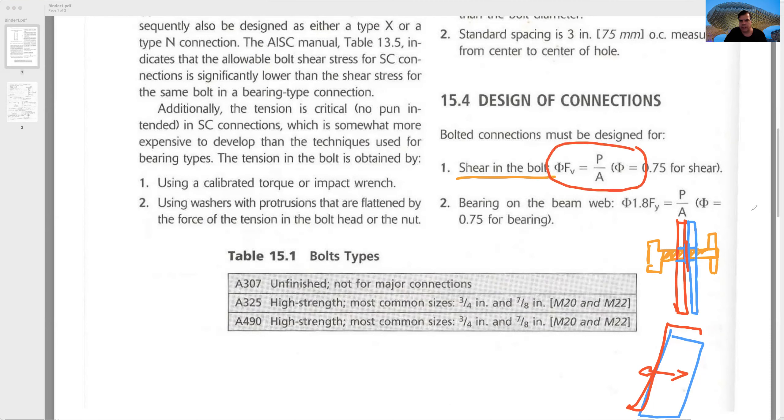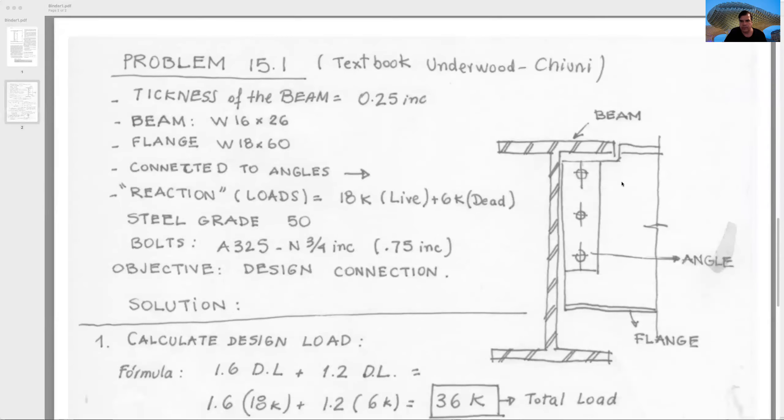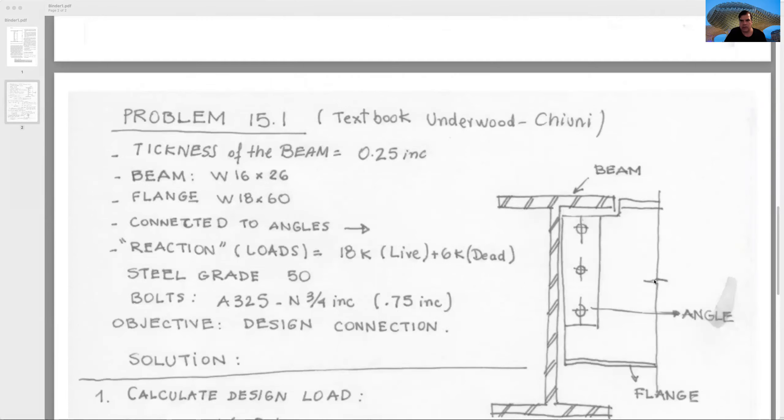Shear will be fvFv equal to P divided by A. P is the force, A is the area. The bearing on the beam web will be 1.8 Fy equal to P force divided by area.